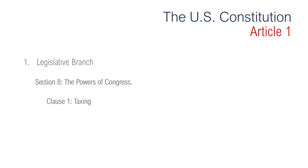Section 8 is about the powers of Congress. Clause 1 is regarding taxing — duties are taxes on imports and exports, impost is a generic term for tax, and excises are taxes on the manufacture, sale, or use of goods. Section 8, Clause 2 is about borrowing. It says Congress has the power to borrow money, which is normally carried out through the sale of U.S. Treasury bonds on which interest is paid. Note that the Constitution places no limit on the amount of government borrowing.